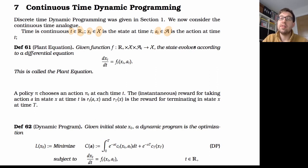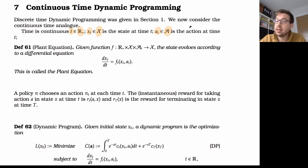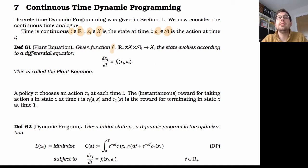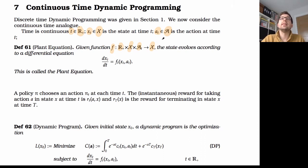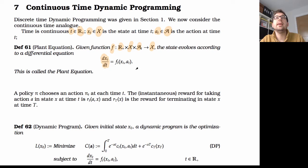Now we need an idea of the evolution of this system, just as before, but we have the plant equation. As before, the plant equation was a deterministic function, where we take our current state, our current action we've chosen, and this determines what the next state is. It's the same idea now, but we're going to use a differential equation. So the plant equation is given by a function f, which takes a time, a state, and an action as its input, and outputs a change in x. The states evolve according to the differential equation ẋ(t) = f(t, x(t), a(t)). This is the plant equation in this case.